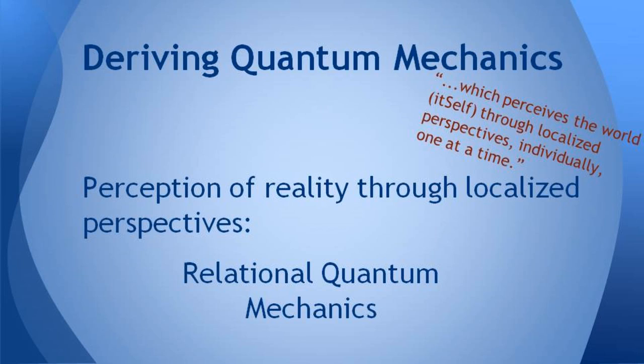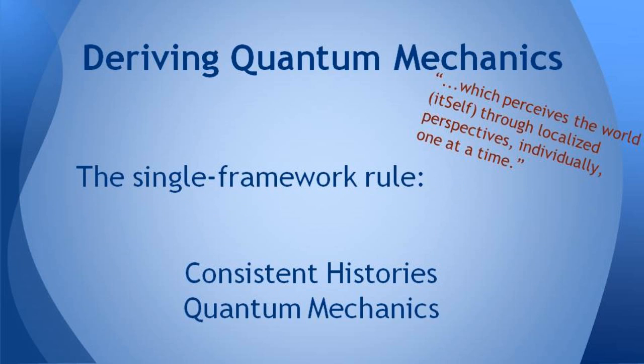And to further derive quantum mechanics, we use the second statement in the upper right in red: which perceives the world itself through localized perspectives. And perception of reality through localized perspectives is essentially the view of relational quantum mechanics, that a quantum mechanical measurement is only relevant to a particular point of view.